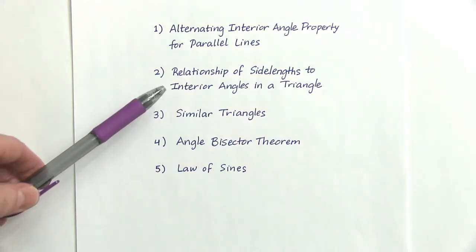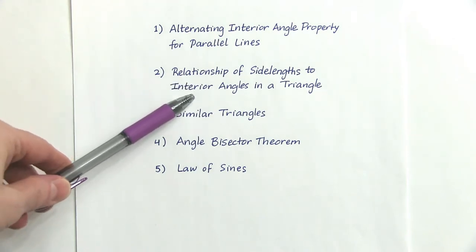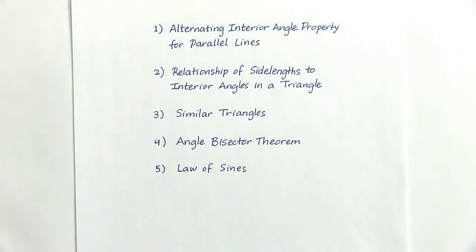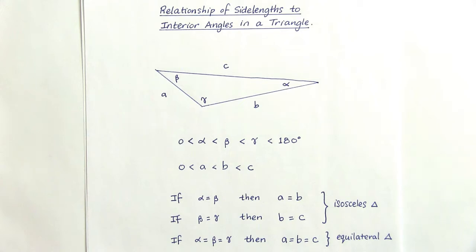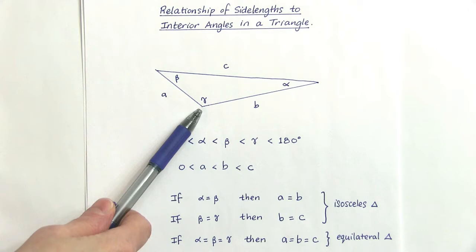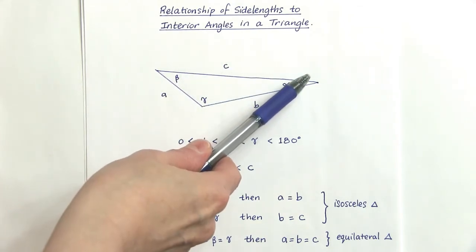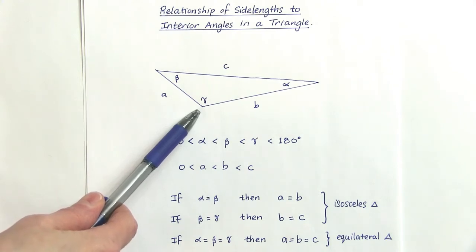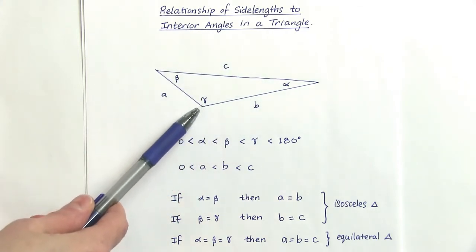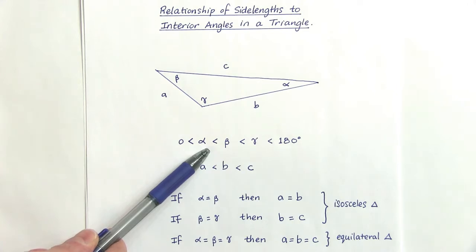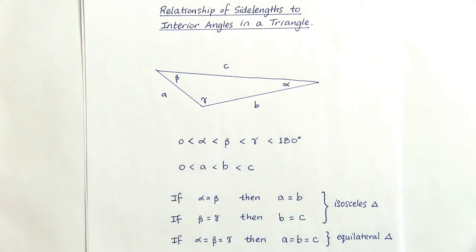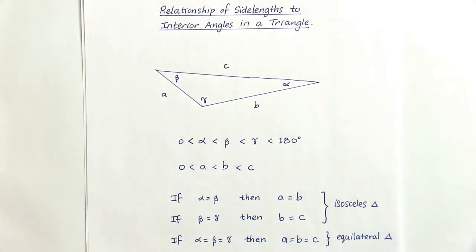The second property tells us how to relate the side lengths of a triangle to its interior angles. The shortest side of a triangle is always opposite the smallest angle, and the longest side is always opposite the largest angle. So if alpha < beta < gamma, then the corresponding opposite sides satisfy a < b < c. If any two angles are equal, then the corresponding opposite sides are equal.